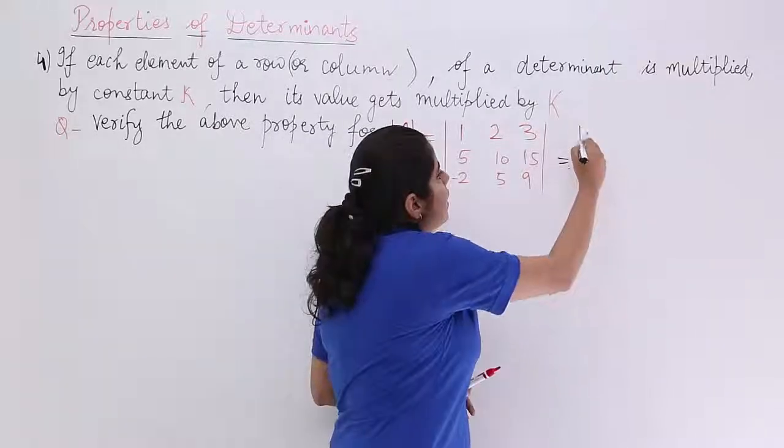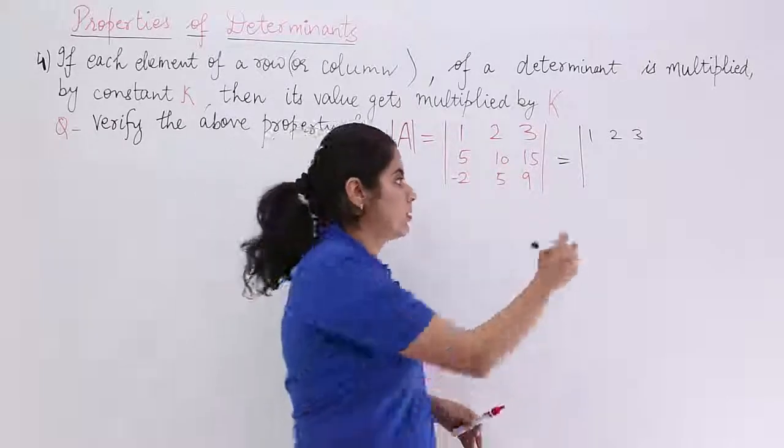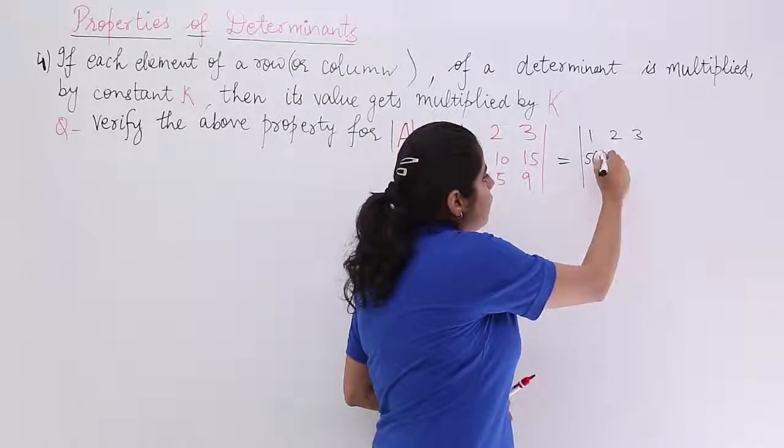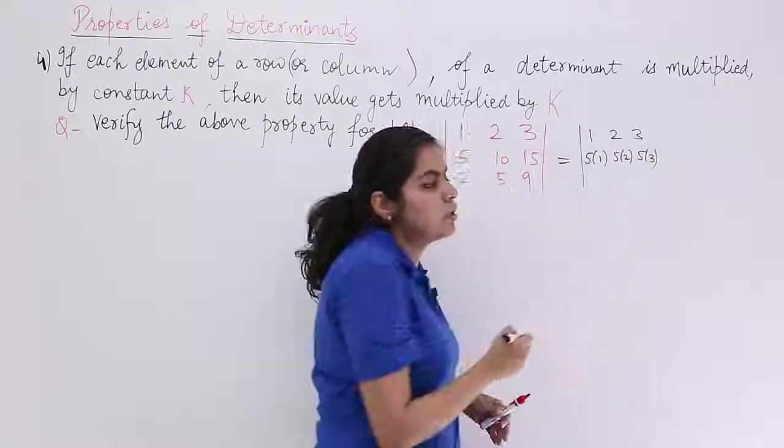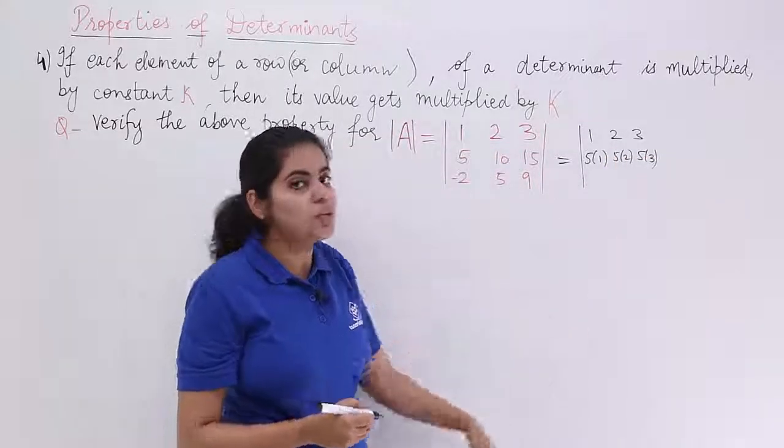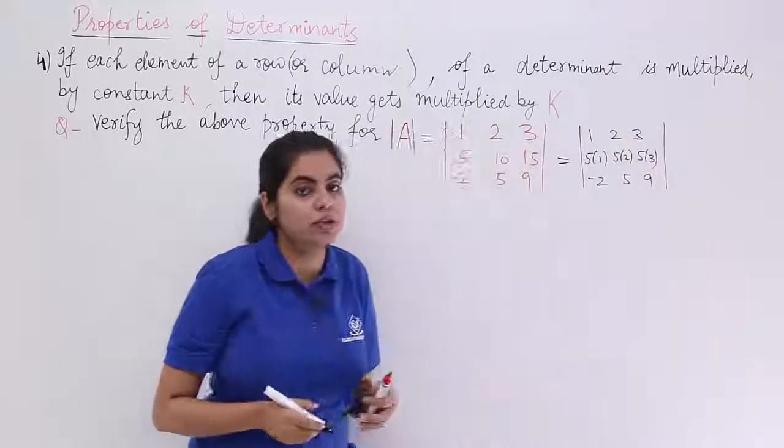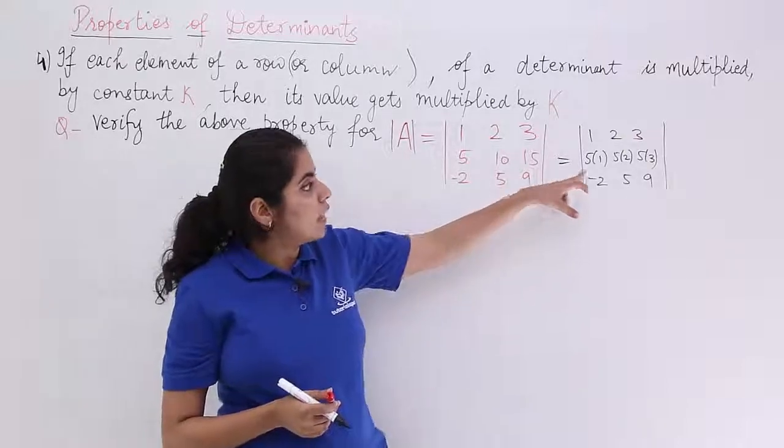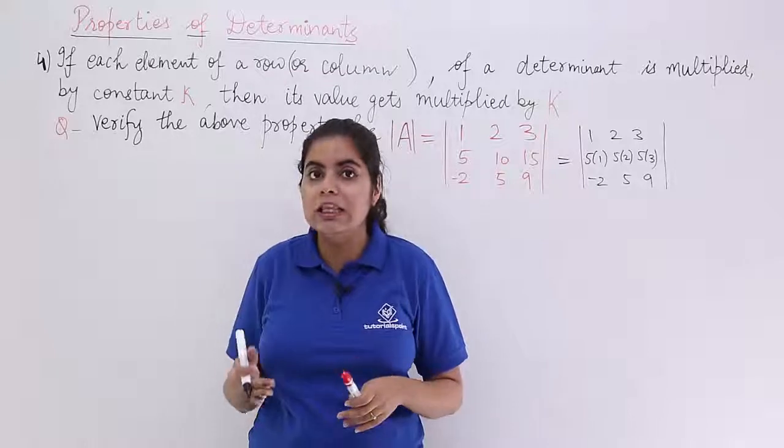That means what? 1, 2, 3 is fine. 5, 10, 15 is what? 5 means 5 into 1, 10 means 5 into 2, 15 means 5 into 3. And minus 2, 5, 9 is okay. It doesn't have to be related to row 1 and 2. That means 5 is a constant factor that is named as K in the property.